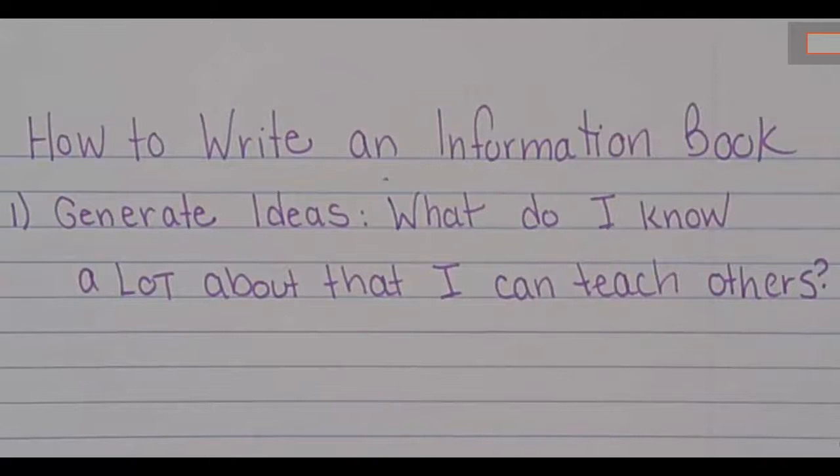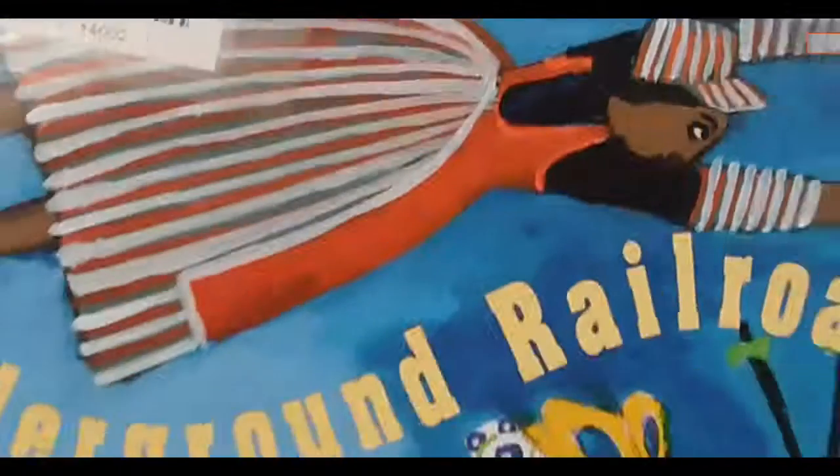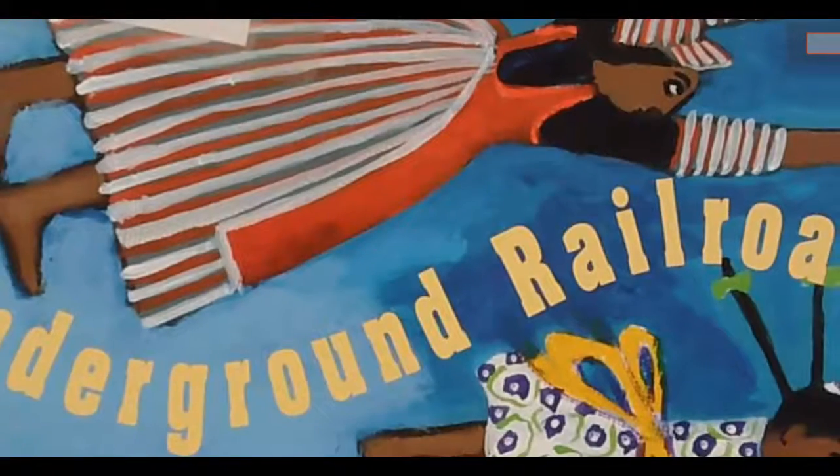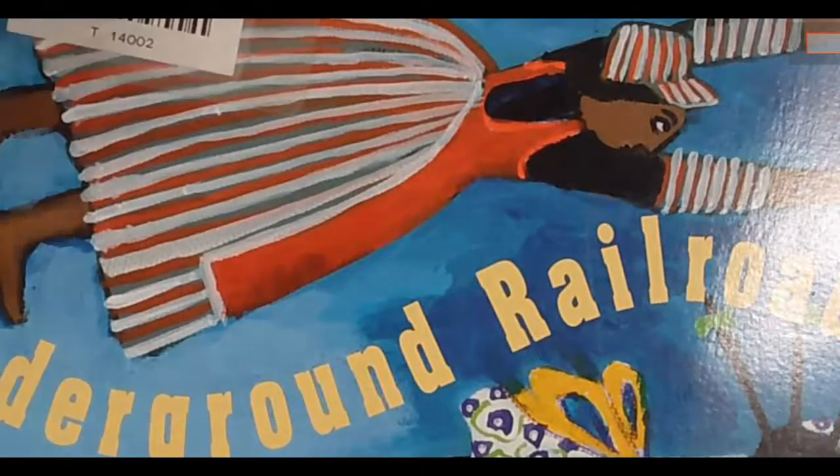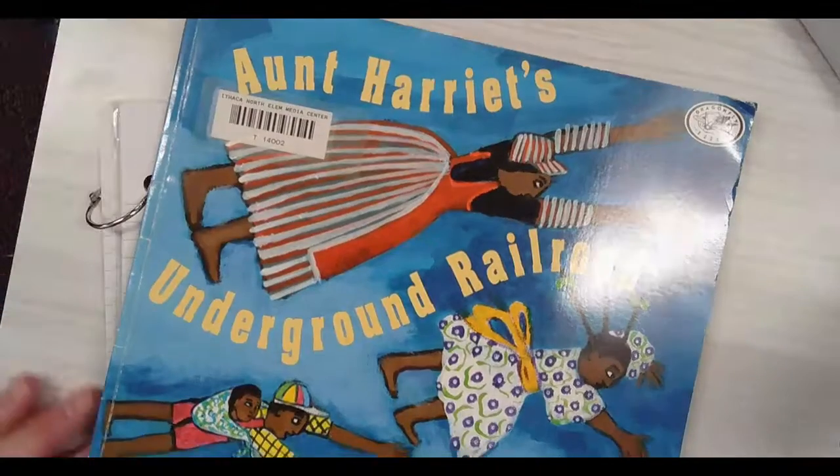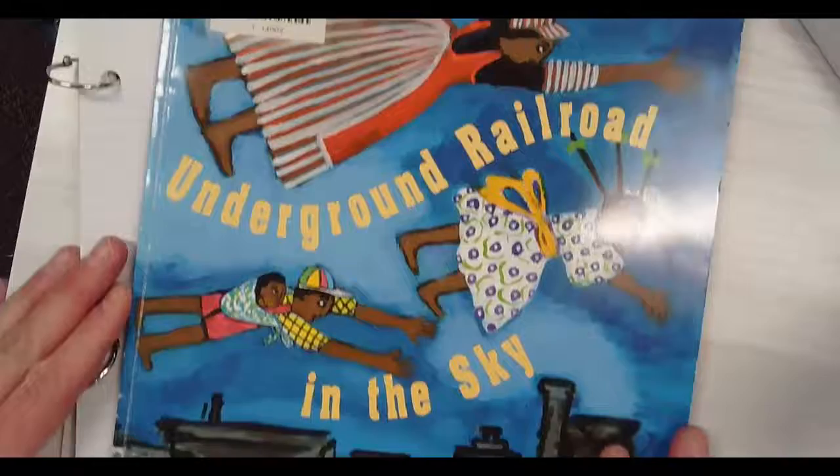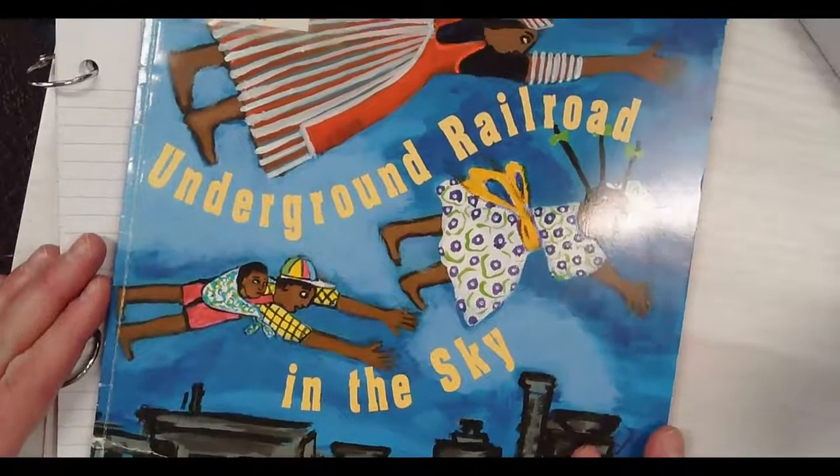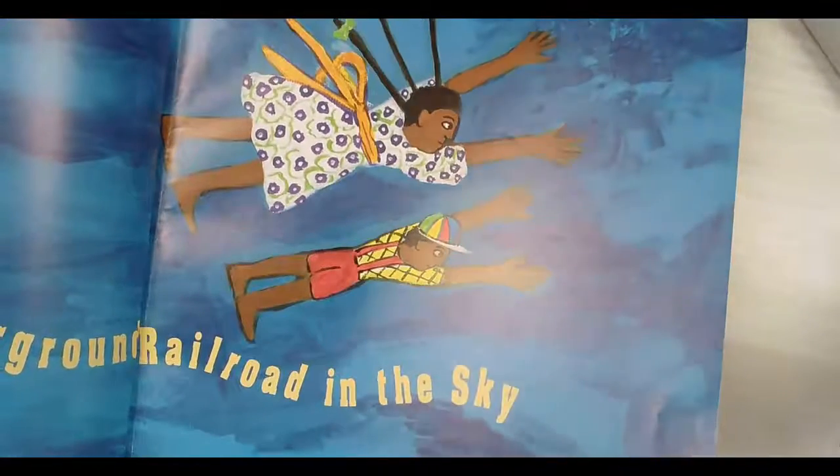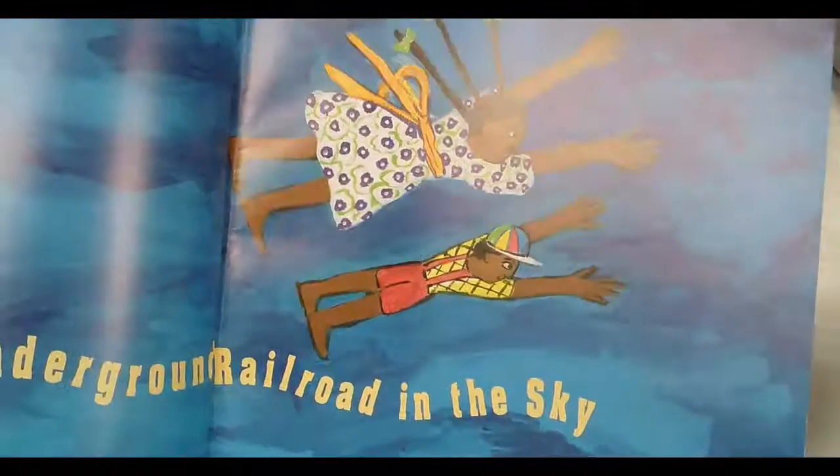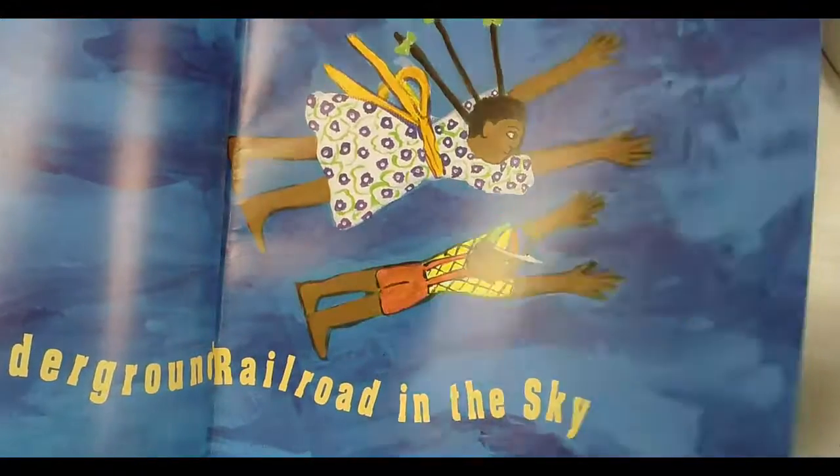I'm going to pull out a couple of these. This one looks pretty cool, this is Aunt Harriet's Underground Railroad in the sky. Look at this, they have people flying under Aunt Harriet's Underground Railroad in the sky. Is this the typical book that you think about when you think about an informational book? No.